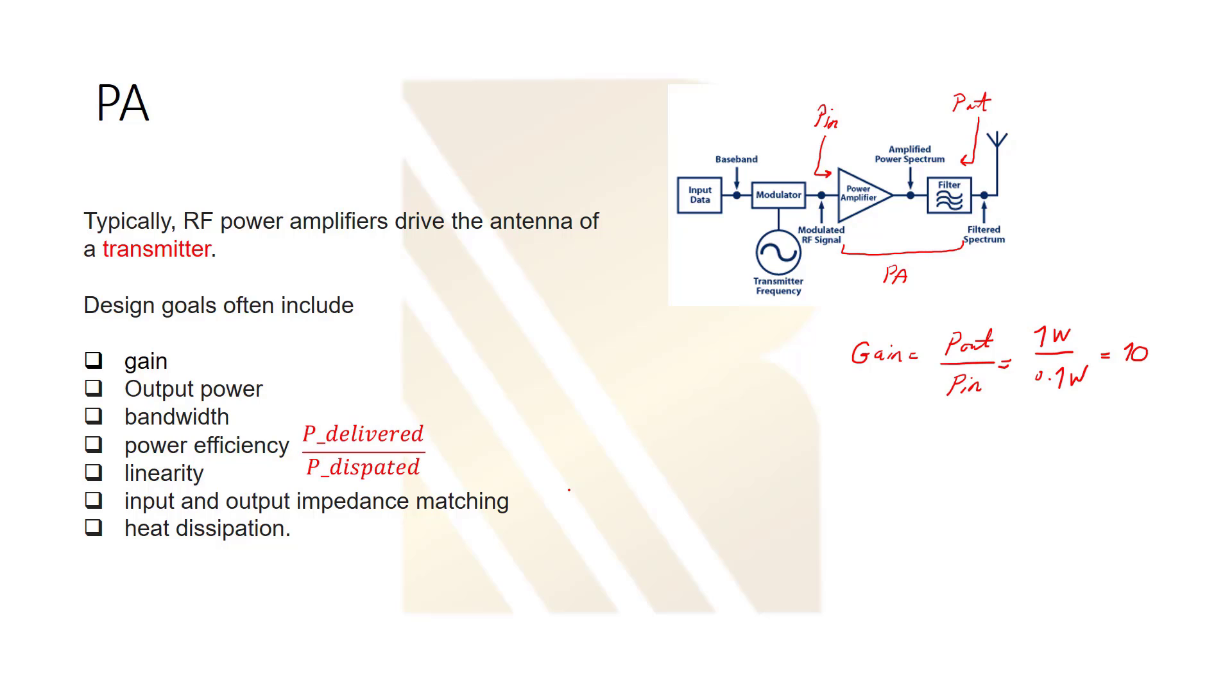One of the most important goals in the design is power efficiency. Power efficiency is a ratio of delivered power, or let's say output power, to the dissipated power, or the power consumed by power amplifier. So, power efficiency, let's say PE, is equal to POUT, or P dissipated.